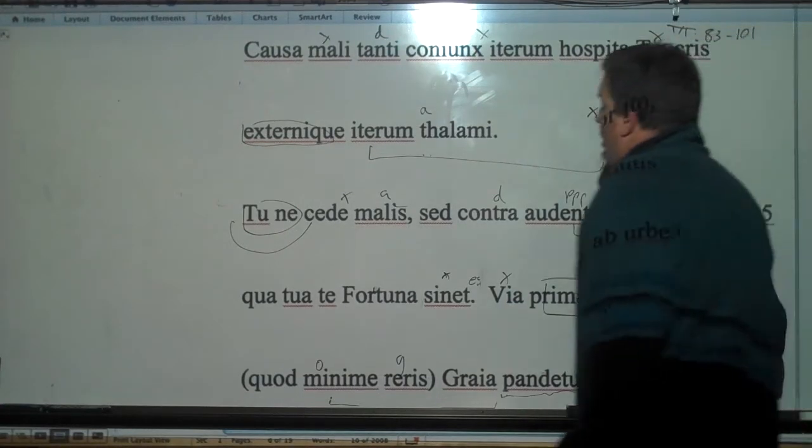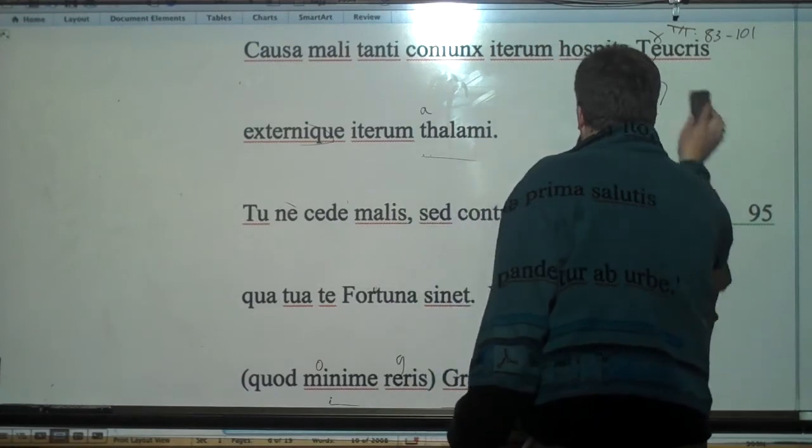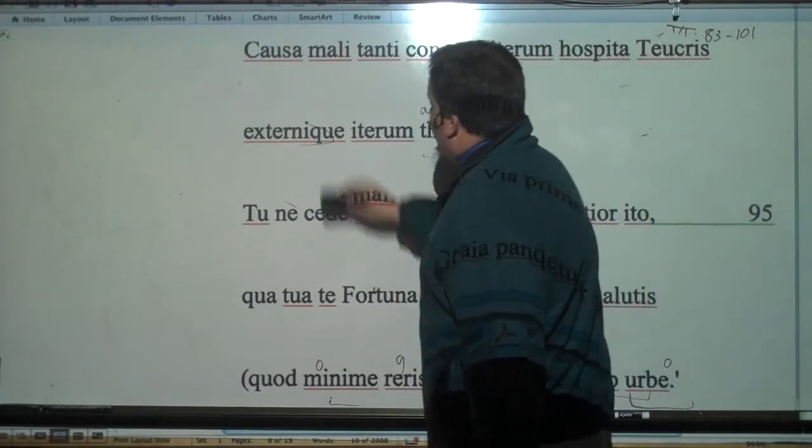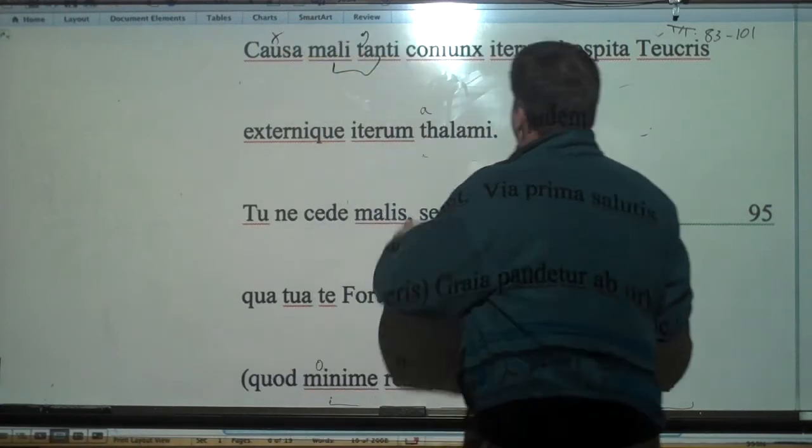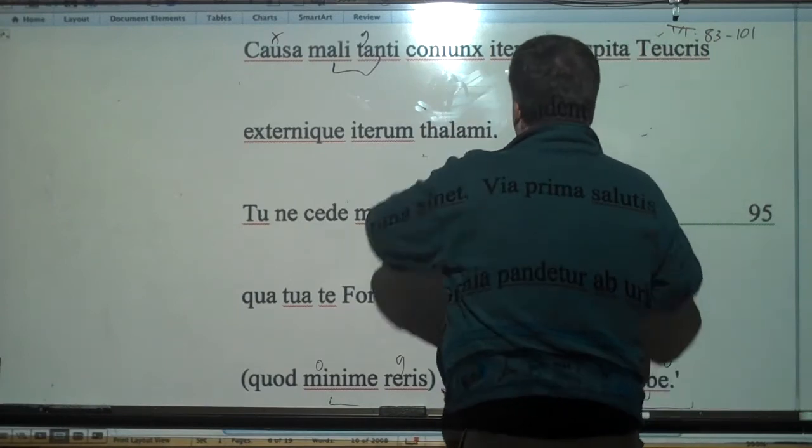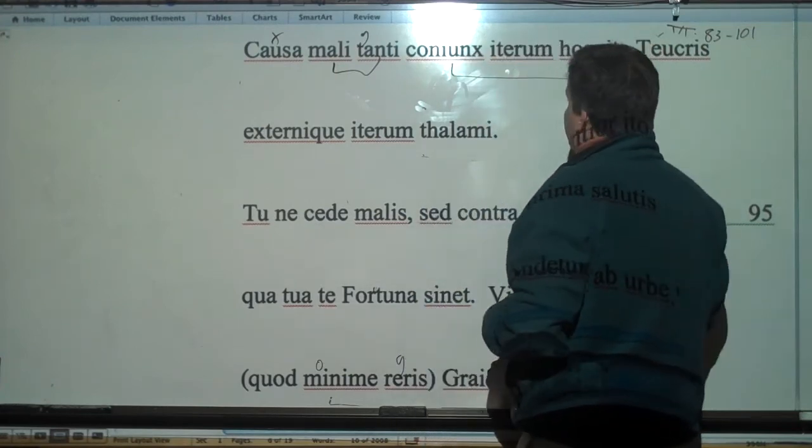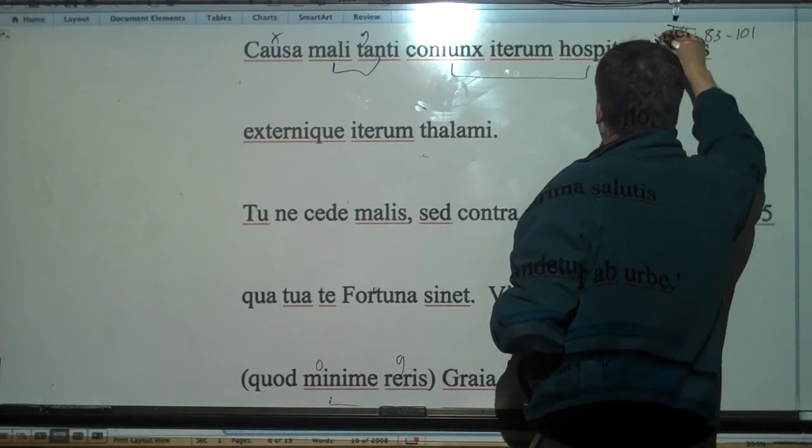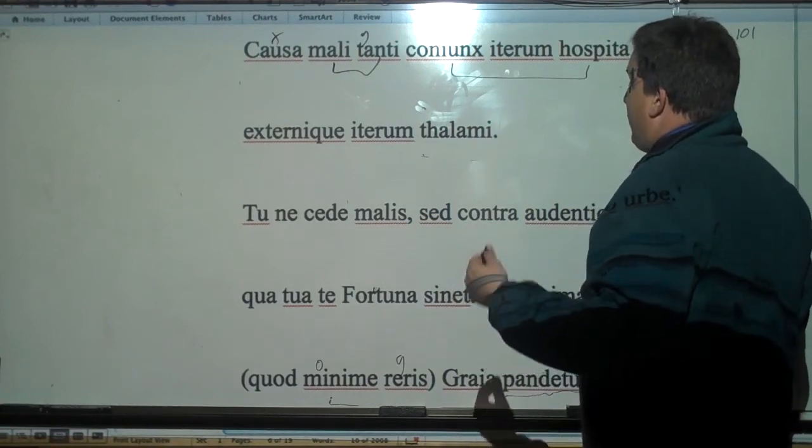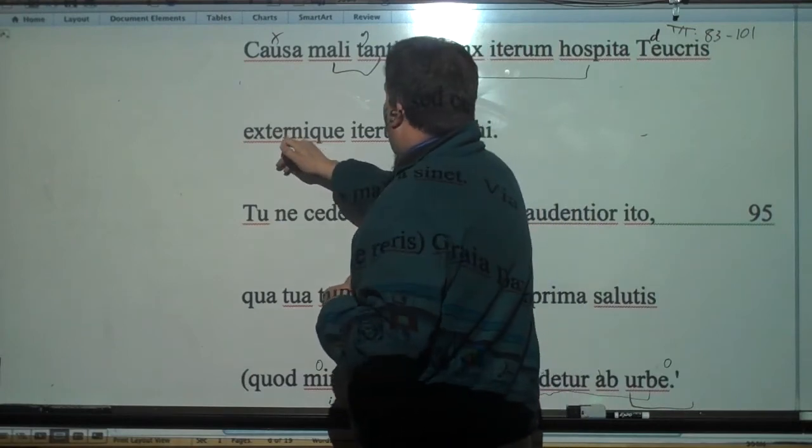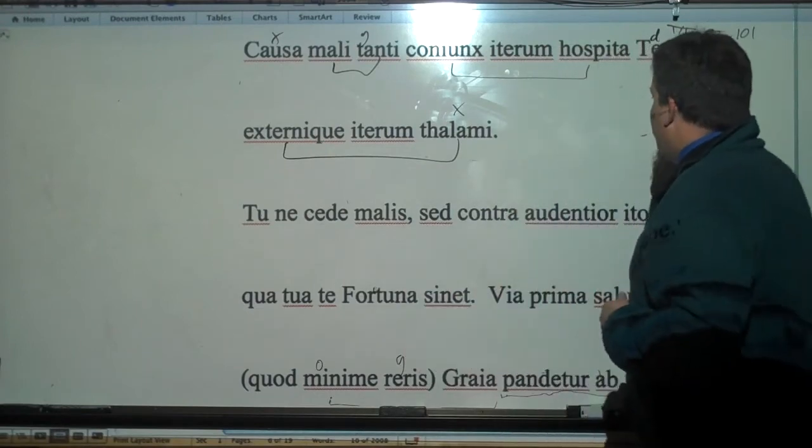And then she goes on and says the cause then, to tell you again, this is very like the Trojan War. The last six books of the Aeneid are really like the Trojan War all over again. The cause of this evil, of such great evil, genitive, is a coniunx, is again a wife, a foreign wife, a guest wife, to the Teucrians - it's a dative of reference. So the cause of such great evil again for the Teucrians is a foreign wife and foreign bridal chambers, again giving the idea of this.